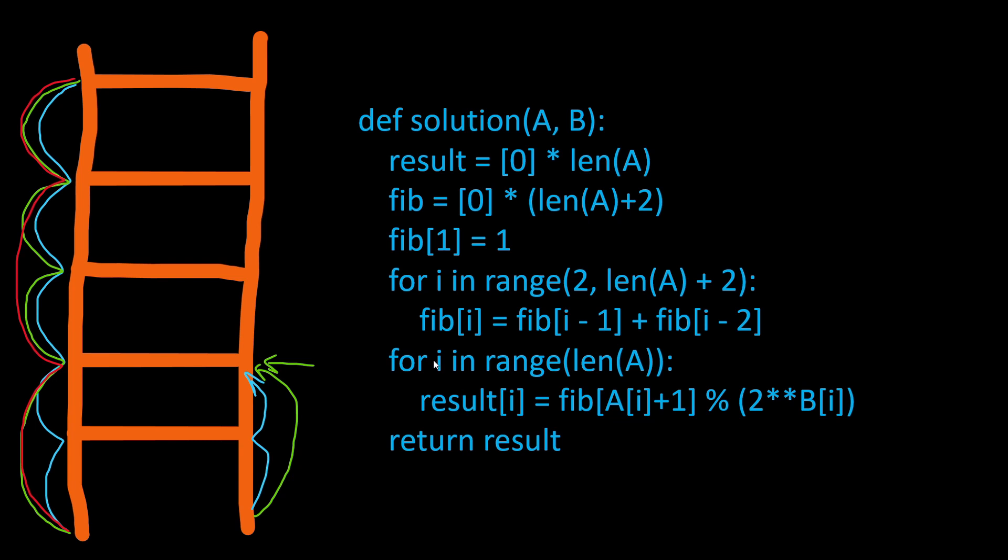Then we reach the part where we are writing our solution. So for i in range up to length of A. So for each element or for each ladder that is defined in the list of A. Because remember the list of A contains the sizes of the ladders. So for each ladder we are going to read its size. And we are going to apply the formula of the Fibonacci number. So the result[i] is going to be equal to the Fibonacci number A[i] plus one modulus 2 to the power of B[i]. This was defined by the problem itself.